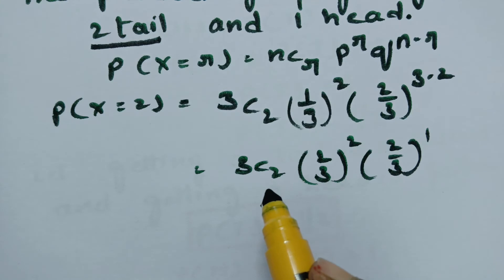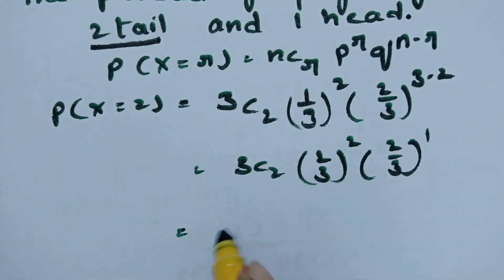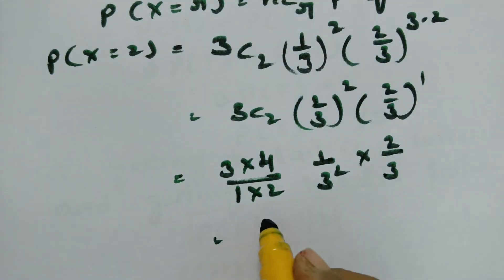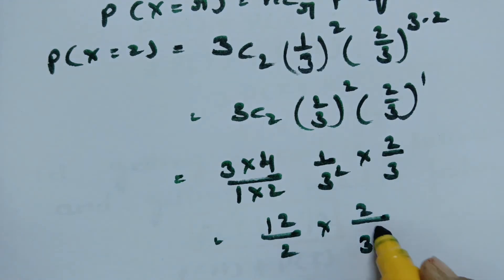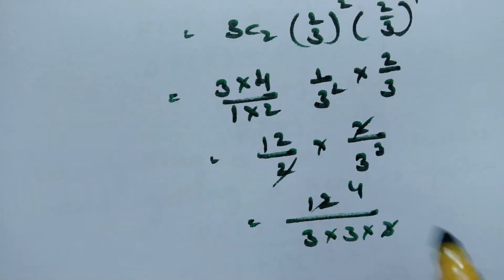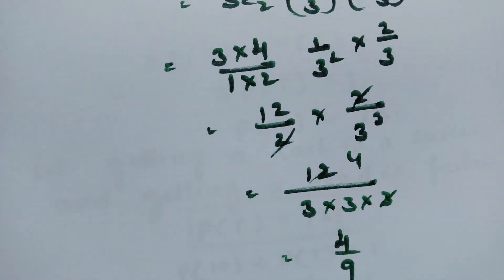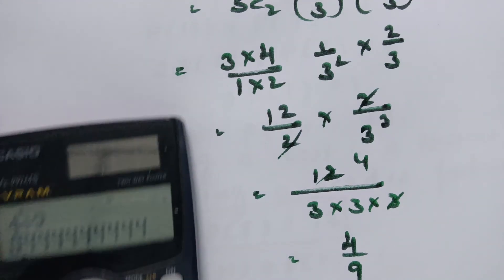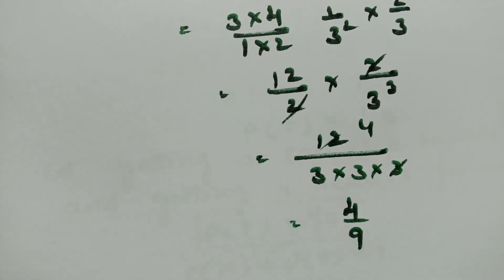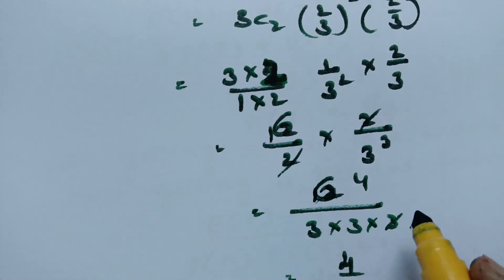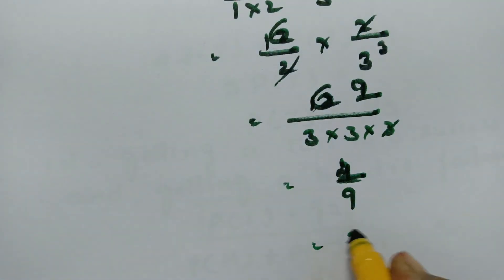nCr = n! / ((n−r)! · r!). Using the shortcut, 3C2 = 3. So we get 3 · (1/3)² · (2/3) = 3 · (1/9) · (2/3) = 6/27 = 2/9. Note: an earlier calculation of 4/9 was a mistake — the correct answer is 2/9.